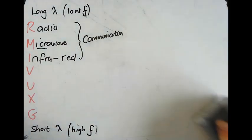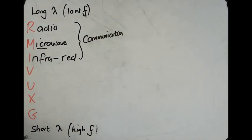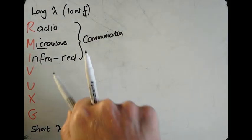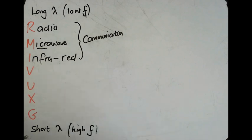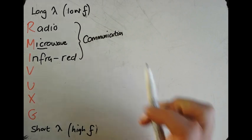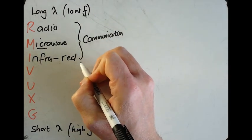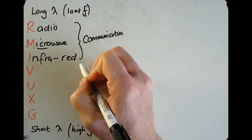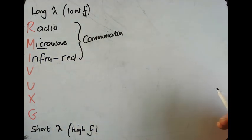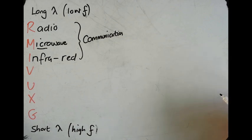Infrared is heat. When you stand in the sun and feel warmth on your skin, it's because of the infrared component of the EM waves. The danger is that it can burn your skin — if you stand too close to a radiator and leave your hand on it, you will burn your skin.